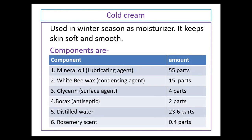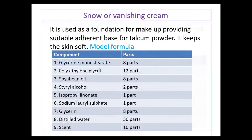Cold cream is used in winter season as a moisturizer — it keeps skin soft and smooth. Snow or vanishing cream is used as a foundation for makeup, providing suitable adherence, or for talcum powder — it keeps the skin soft. Here, different components are present that are used in vanishing cream or snow.